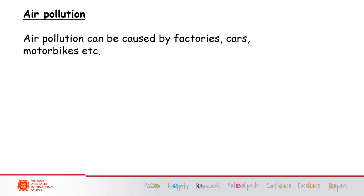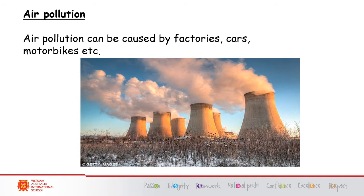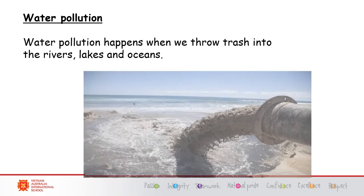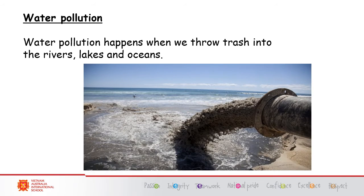Air pollution can be caused by factories, cars, motorbikes, and many other things. Water pollution happens when we throw trash into the rivers, the lakes, and the ocean. Water pollution also happens when things like oils get into the water and harm the animals and the water.